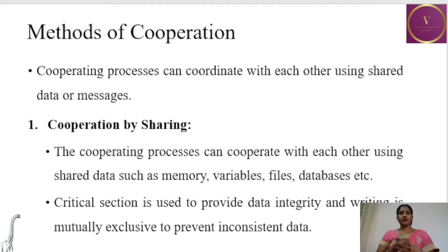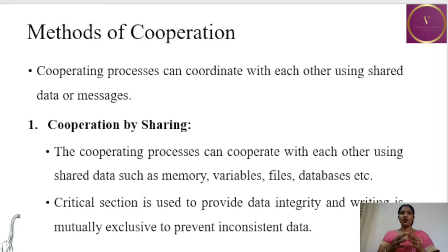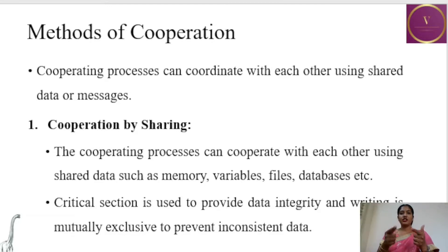Now let us see the methods of cooperating processes. There are two methods: first is by sharing, and second is by message passing. Cooperating processes can coordinate with each other using shared data or messages. In cooperation by sharing, there is a common space in memory which two processes share — both processes share access to the same shared data.